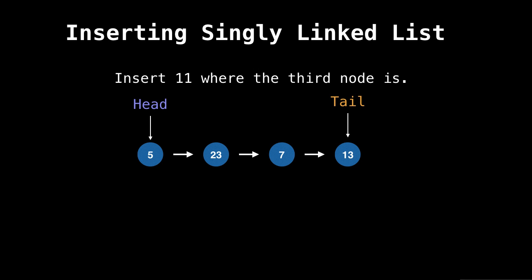Starting with singly linked lists. So here is a singly linked list. I've outlined where the head and the tail is. Now we want to insert 11 at the third position where seven is currently. Let's walk through an example. So the first thing we do is we create a new pointer which points to the head. This is almost always the first step in all linked list operations.